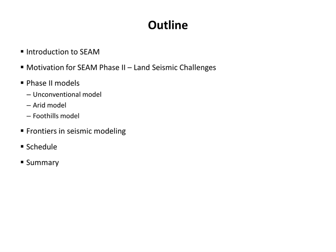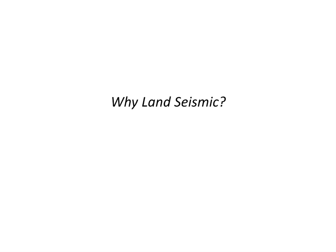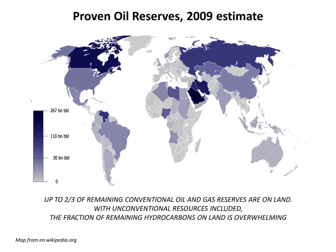Before talking about the models, it is worth spending a few minutes on the motivation for picking land seismic challenges as the theme for Phase 2. Why land seismic for SEAM Phase 2? The simple answer is that most of the world's remaining hydrocarbons are onshore. Estimates are that up to two-thirds of the world's remaining conventional oil and gas reserves are located or will be found on land — a large fraction in the giant reservoirs of the Middle East, Russia, and Southwest Asia.